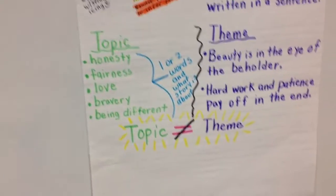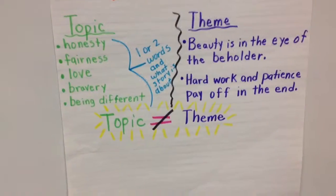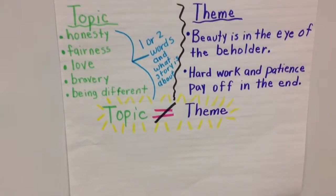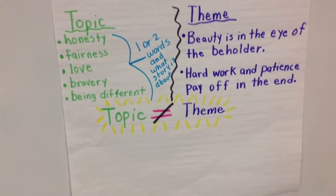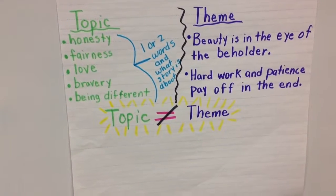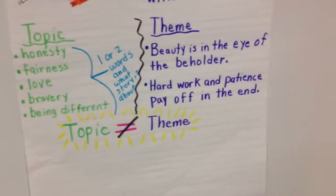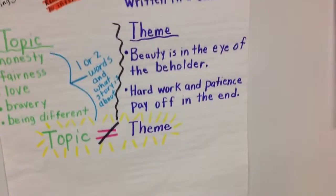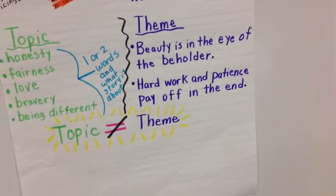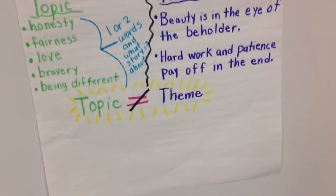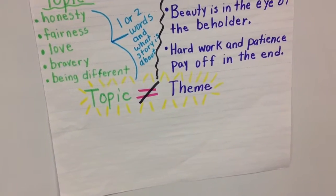As you'll see on our anchor chart, stories have topics that they are about — perhaps honesty, fairness, love, bravery, and being different. That's just what the story is about. The theme is actually different than a topic. And you'll see at the very bottom, the topic does not equal the theme.